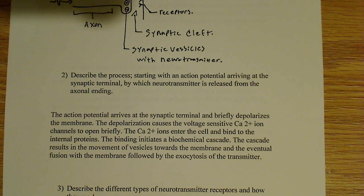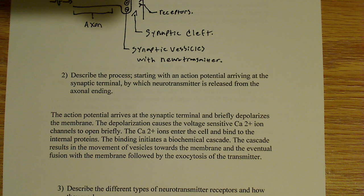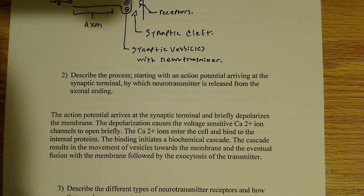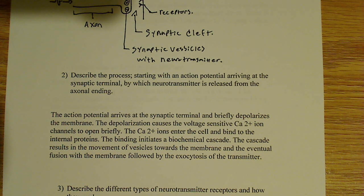Once these vesicles, which I drew in the previous example, eventually fuse with the membrane — followed by what's known as exocytosis of the neurotransmitter — that's essentially the release of the neurotransmitter. Intuitively, that's what's going on when a transmitter is being released. It's not a very difficult concept to grasp at all.